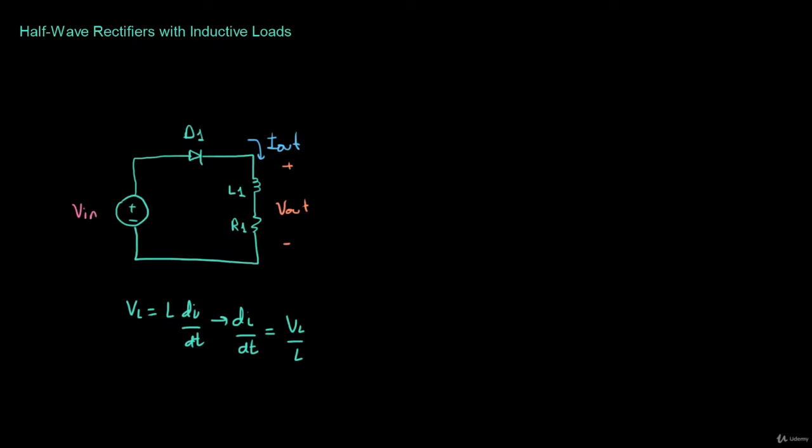What that means for a rectifier is that the current at the output is going to be lagging the output voltage, meaning they're not going to be the same shape like in the previous example. In this case, the current is going to be behind in time with respect to the voltage. So let's go ahead and draw the output voltages and currents.